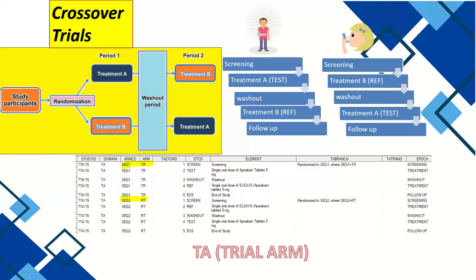For the crossover dataset, we create sequences: Sequence 1 is Test then Reference (TR), and Sequence 2 is Reference then Test (RT) — essentially AB and BA. We enter this information in the Excel sheet and create the dataset based on the crossover study design. The ARM and ARMCD variables are key: for crossover studies, we enter the sequence; for parallel studies, we enter the treatment name.